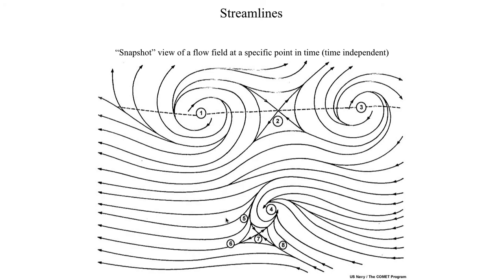That's going to do it for this introductory segment of lecture 12 and our first look at trajectories and streamlines. There is some mathematics that go into streamlines, but it's not immediately important — you'll cover those in later dynamics classes. For now, that's all we'll worry about regarding trajectories and streamlines. In the next segment, we will start talking about the idea of the thermal wind.